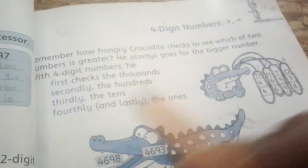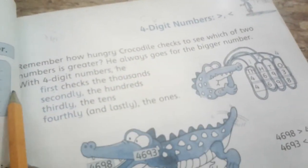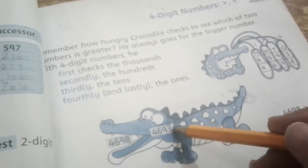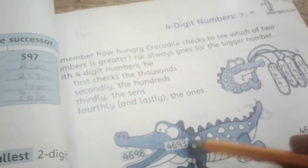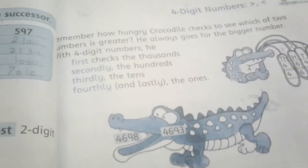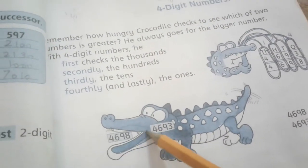Let's start from here. They say, remember how hungry Crocodile checks to see which of the two numbers is greater. Crocodile always checks which number is bigger. He always eats the bigger number.